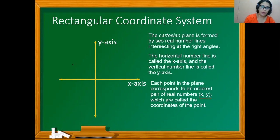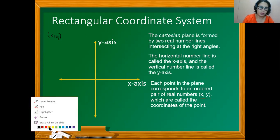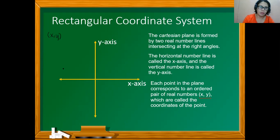The first number is the x-coordinate, which tells how far to the left or to the right the point is from the vertical axis. The second number is the y-coordinate, which tells how far up or down the point is from the horizontal axis. The x-coordinate is also called the abscissa, and the y-coordinate is called the ordinate. Together, this pair is called the coordinates.